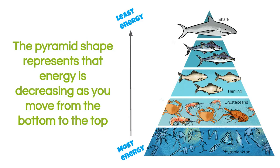The pyramid shape is really important. There's a reason why the pyramid shape is used rather than a square or a circle, and that's because pyramids get smaller as you go from the bottom to the top. That represents how energy decreases as you move from the producer level all the way to the top of the food chain.